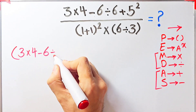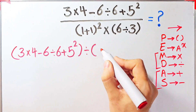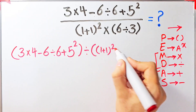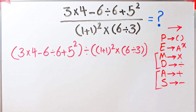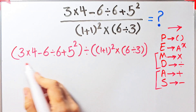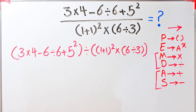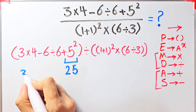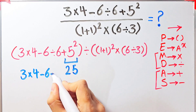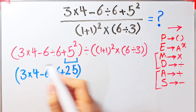We have three times four minus six divided by six, then plus five to the power of two in the numerator, and in the denominator one plus one then to the power of two, times six divided by three. According to PEMDAS, first we simplify the parentheses. Inside the first parentheses we have multiplication, subtraction, division, addition, and an exponent. First we simplify the exponent: five to the power of two equals 25.